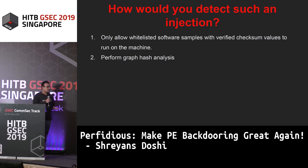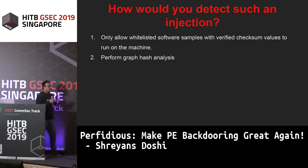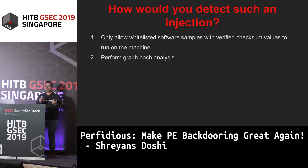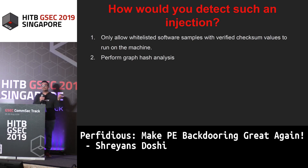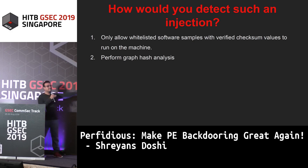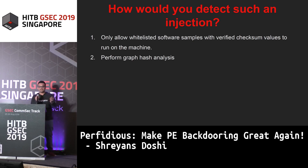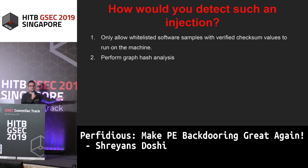How would you detect such an injection in your PE file? If a PE file injected using Perfidious were presented to you, and your system only allows whitelisted software whose checksum values you've verified, you can detect injection because the checksums will have been recalculated to accommodate the changes. You can also perform graph hash analysis — as covered in yesterday's talk — which creates a hash of the call graph of the entire structure. This takes the dot-text section into account and would catch changes caused by the inserted jumps.